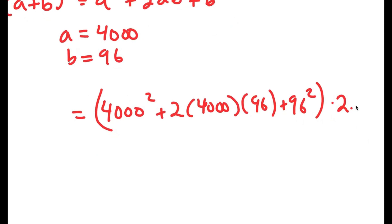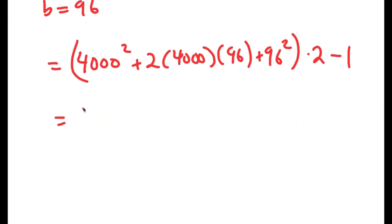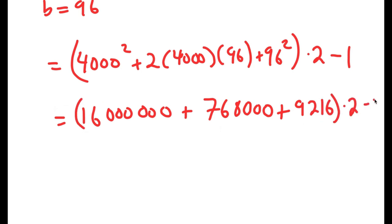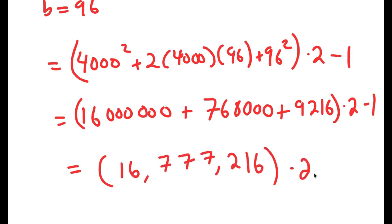All of this times 2 minus 1. Now, 4000 squared equals 16,000,000. 2 times 4000 is 8,000, and 8,000 times 96 equals 768,000. And 96 squared equals 9,216. All of this times 2 minus 1. Adding all of these up inside the parentheses, I get 16,777,216. So now I have this times 2 minus 1.